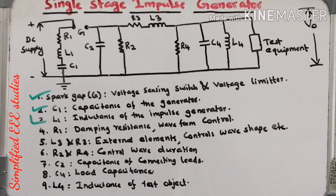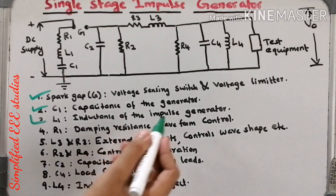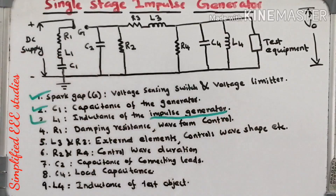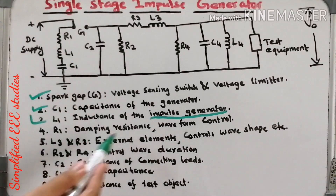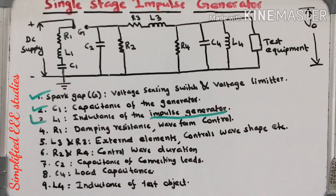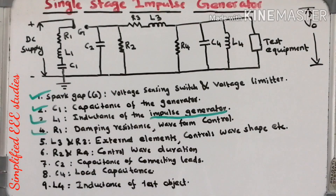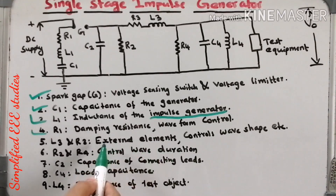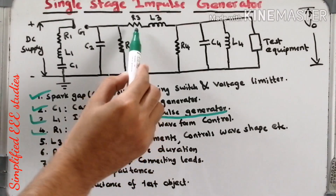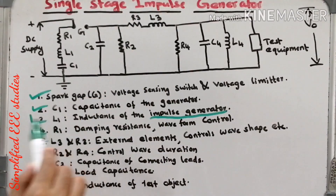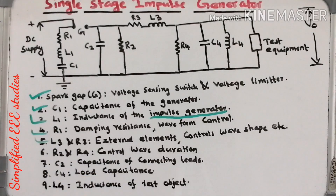L1 is the inductance of the given impulse generator. You can calculate the value of inductance while doing the design of the single stage impulse generator. R1 is known as damping resistance; it helps to control the waveforms. L3 and R3 are external elements added to the impulse generator. By using R3 and L3, it is possible to control the wave shapes.